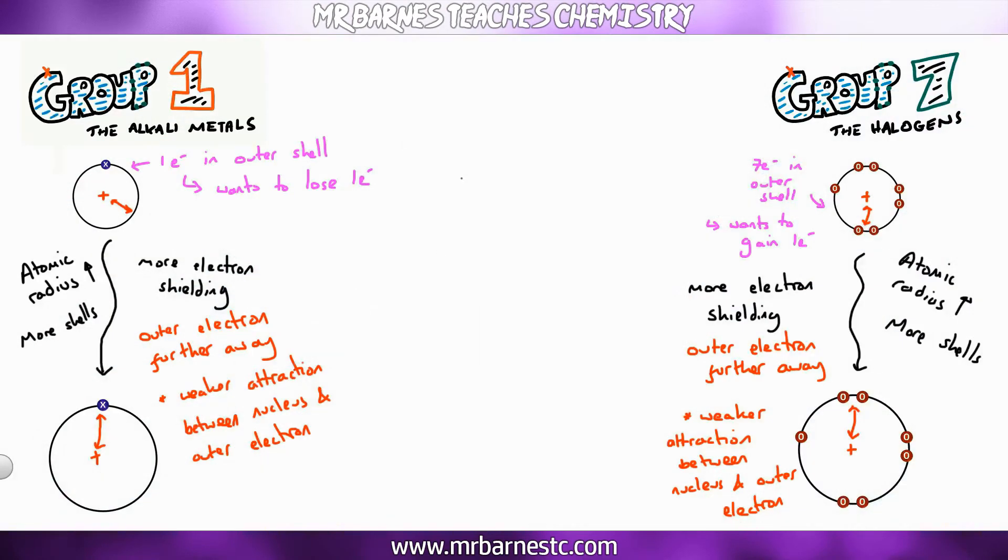So that explanation is exactly the same for group one and group seven. The difference is group one wants to lose one and group seven wants to gain one. So for group one, it's easier to lose that electron because the force of attraction is weaker, therefore it's more reactive as you go down the group. But with group seven, it's harder to gain that electron because the force of attraction is weaker, so it's less reactive.